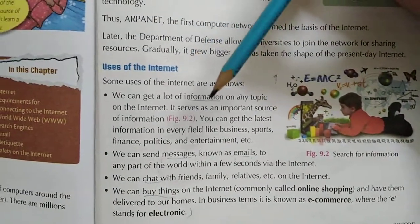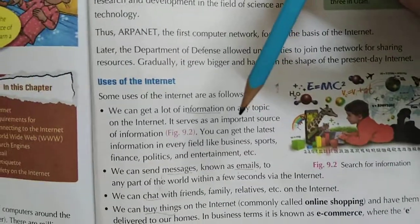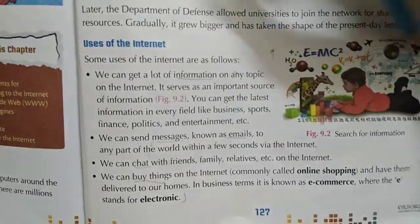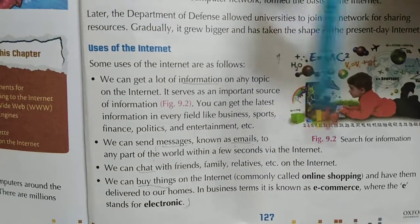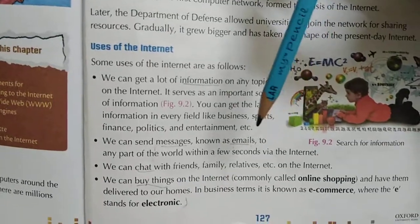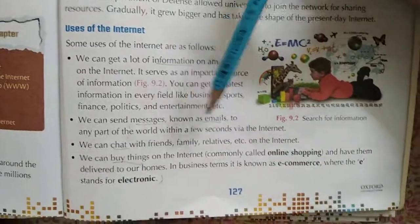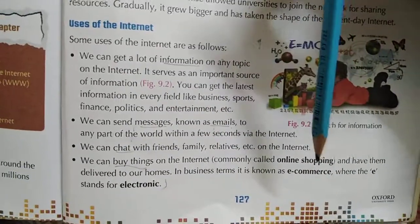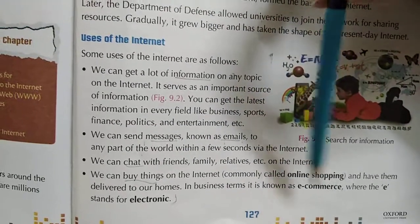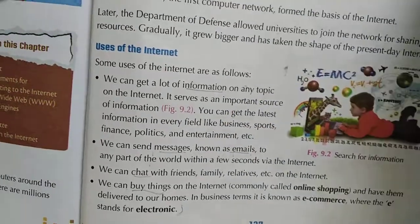So what are the uses of internet? Internet is first of all used for information gaining — you can search any type of information you want on the internet. You can send messages, emails, voicemails, and even make video calls through it. You can chat with friends, and nowadays internet also provides online shopping, which is called e-commerce, meaning websites that allow you to buy and sell things.